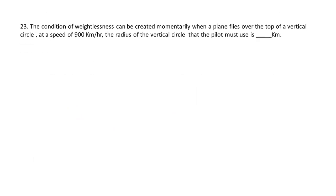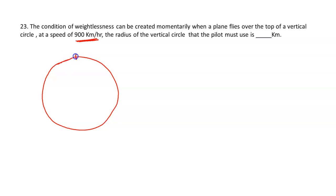The next question is related to circular motion. The condition of weightlessness can be created momentarily when a plane flies over the top of a vertical circle at a speed of 900 km/h. The radius of the vertical circle that the pilot must use is to be found. At the topmost position, the pilot experiences weightlessness, meaning there is no normal reaction — only gravitational force acts, providing the centripetal force.